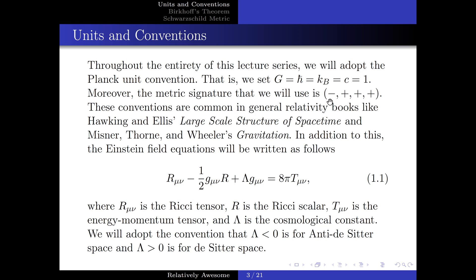These conventions are common in general relativity books like Hawking and Ellis's Large-Scale Structure of Space-Time and Misner, Thorne and Wheeler's Gravitation. In addition to this, the Einstein field equations will be written as follows, where R mu nu is the Ricci tensor, R is the Ricci scalar, T mu nu is the energy momentum tensor, and lambda is the cosmological constant. We will adopt the convention that lambda less than zero is for anti-de-Sitter space, and lambda greater than zero is for de-Sitter space.